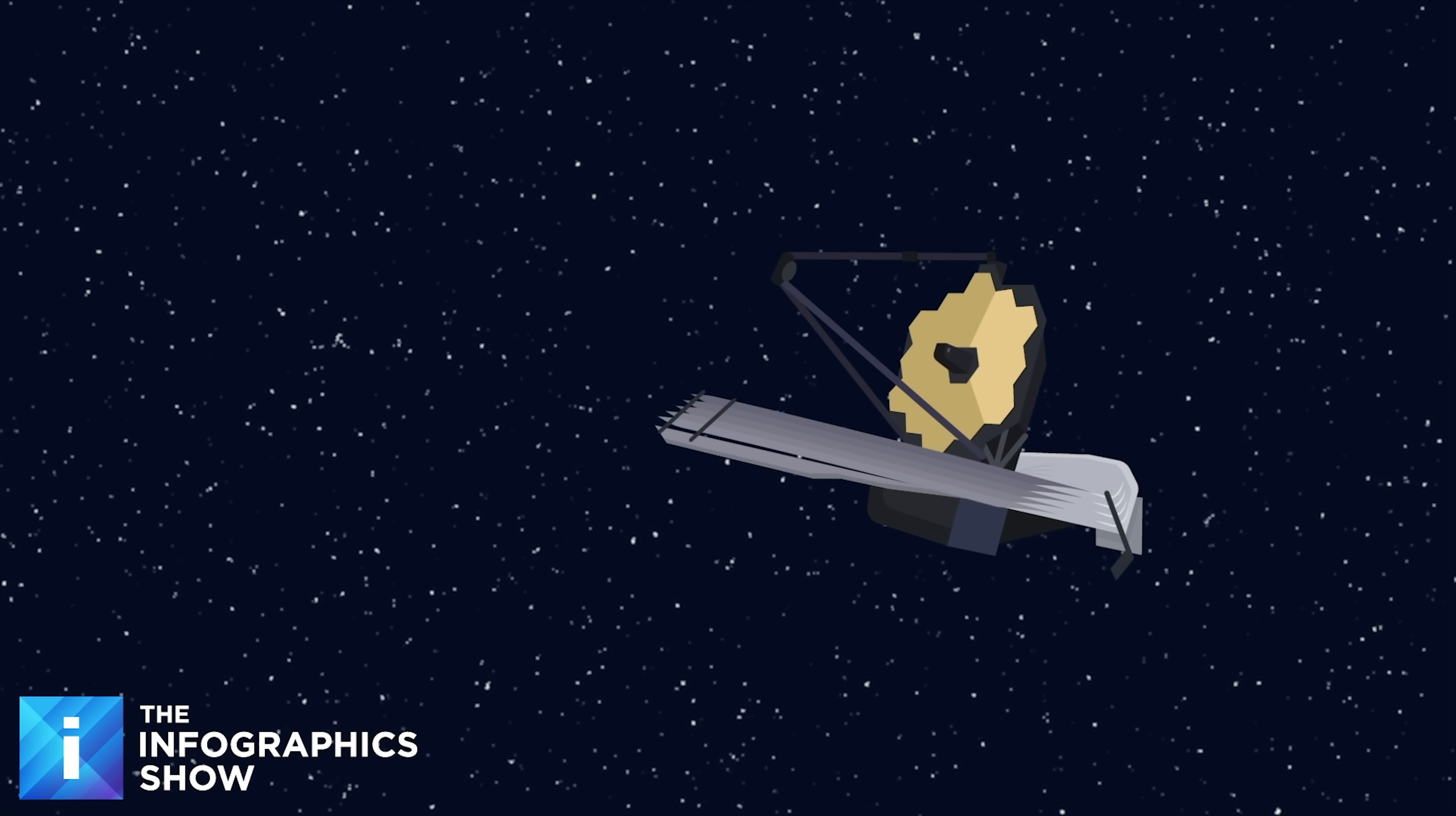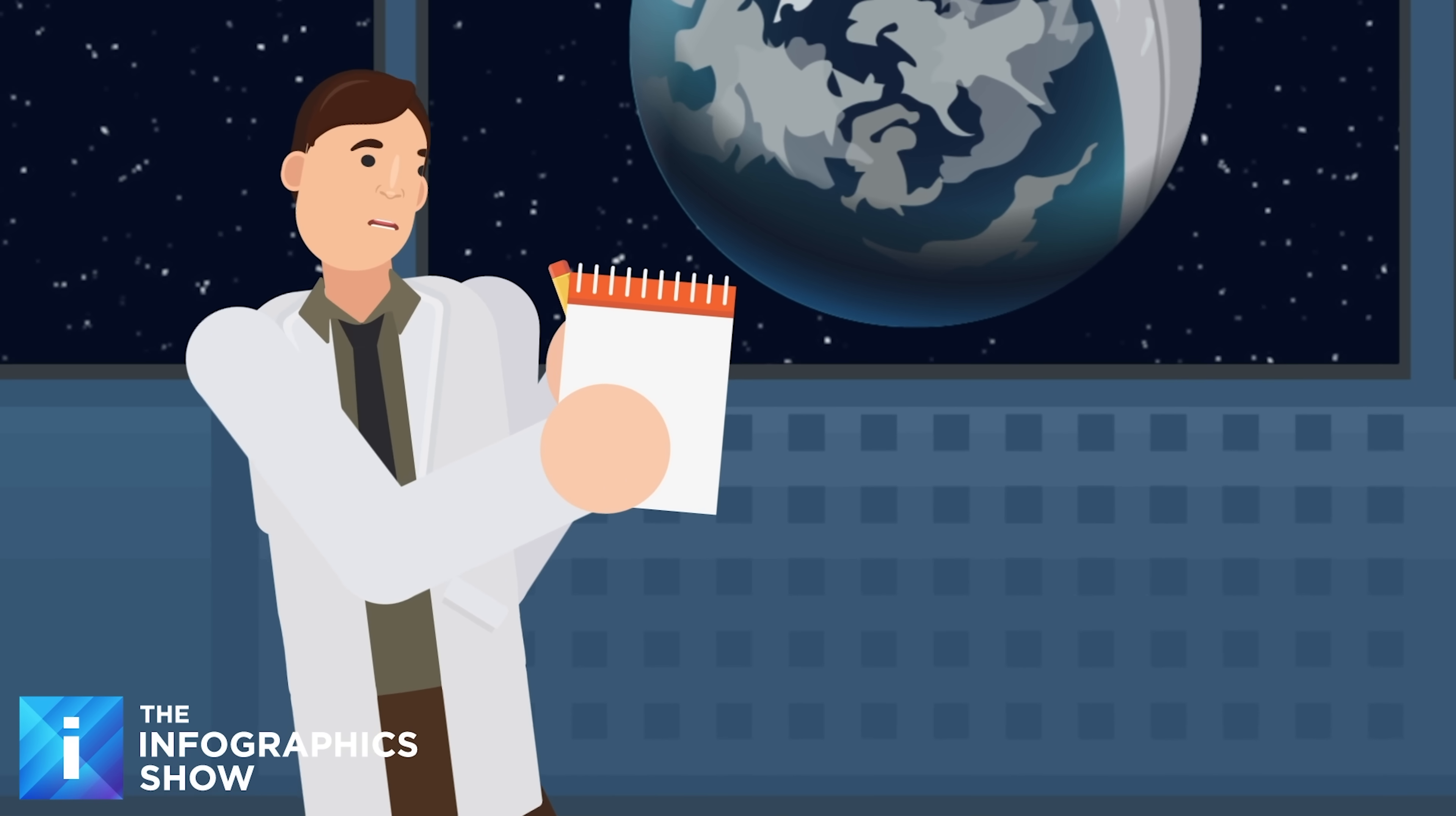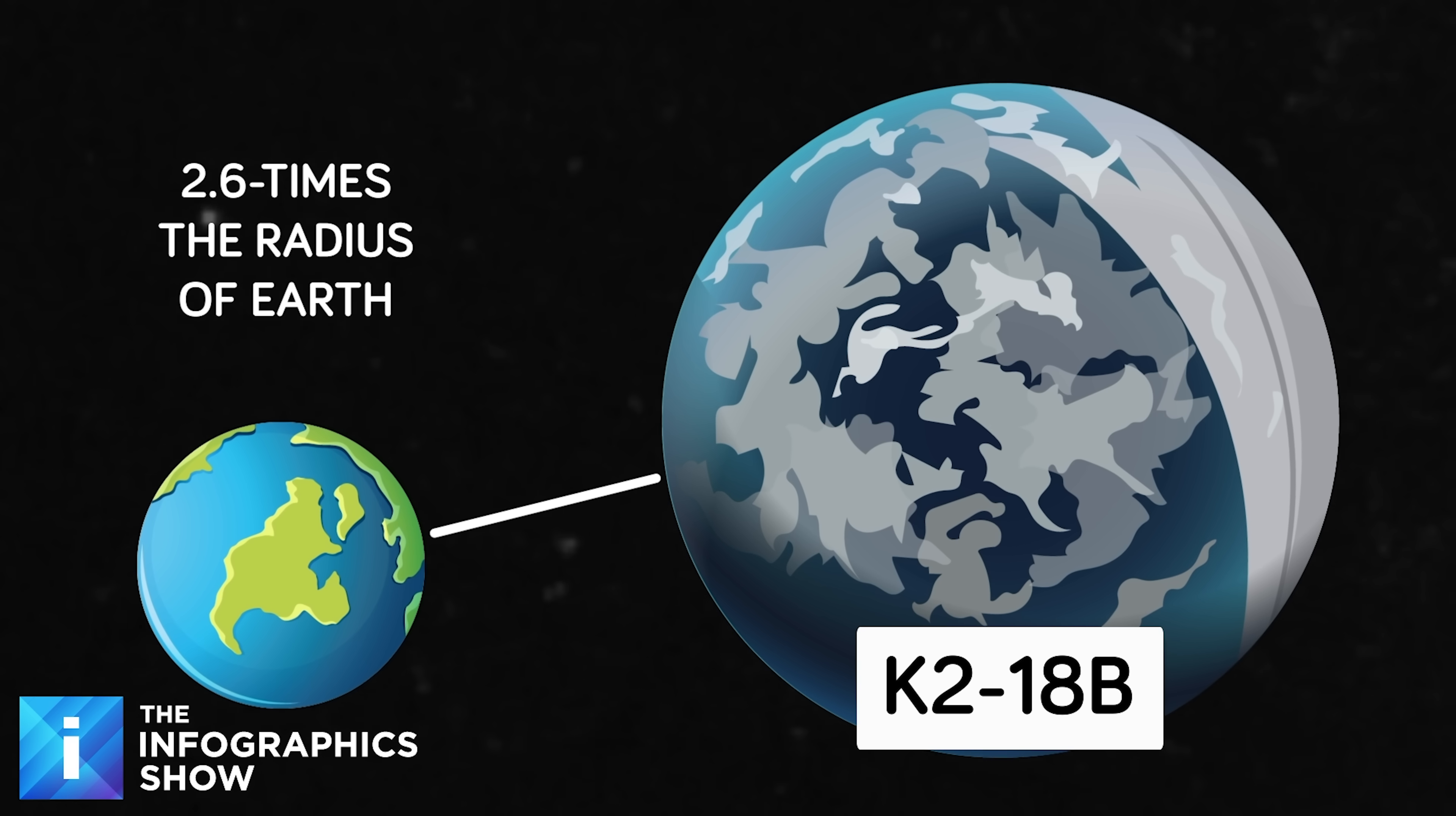Planet K2-18b wasn't the original target. First discovered by the Kepler Space Telescope, it was just one of many new worlds catalogued. But when the James Webb Space Telescope took a closer look, K2-18b stood out, and it quickly proved interesting enough to be followed up on. Classified as a sub-Neptune, or having a smaller radius than Neptune, it's about 2.6 times the radius of the Earth, and it exists within the star's habitable zone.